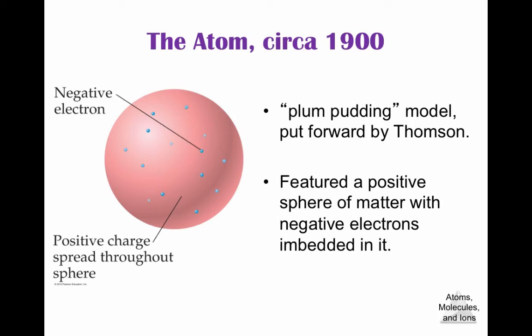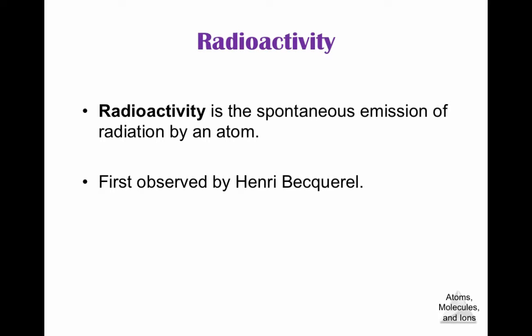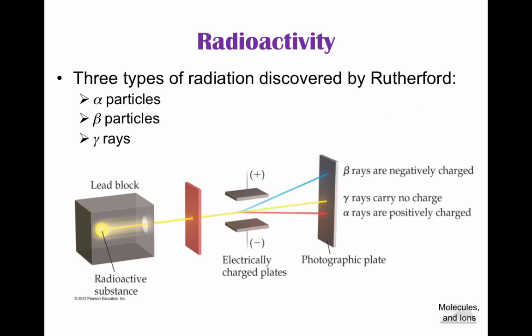Before we continue with the model of the atom, there was one scientist — Henri Becquerel, a French scientist — who found out by accident that there was such a thing as radioactivity. Rutherford then used radioactivity in his work. There were three types of radioactive emission. Alpha particles are equivalent to a helium nucleus — 4 over 2 He — a helium atom with a mass of 4 and two protons. This is the largest radioactive particle, so early atomic studies typically used alpha particles.